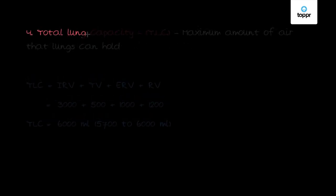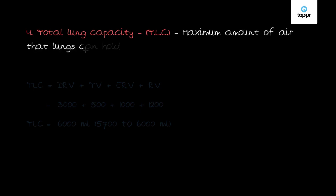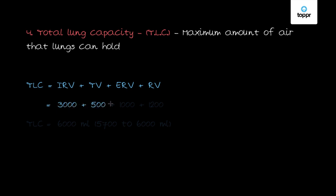The last is the total lung capacity, or TLC. This is the maximum amount of air that the lungs can hold. Total lung capacity is the sum of inspiratory reserve volume plus tidal volume plus expiratory reserve volume plus residual volume — that is 3000 plus 500 plus 1000 plus 1200, giving 6000 ml. It can vary from 5700 to 6000 ml.